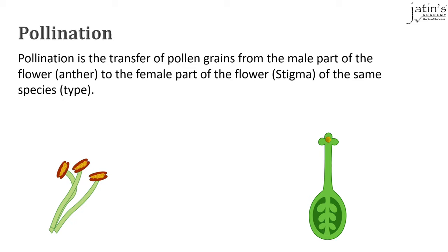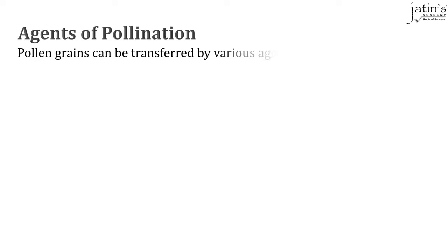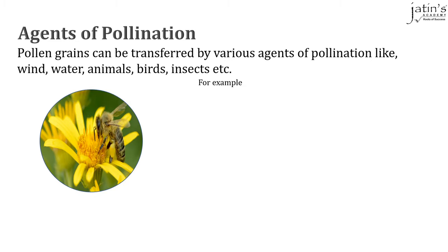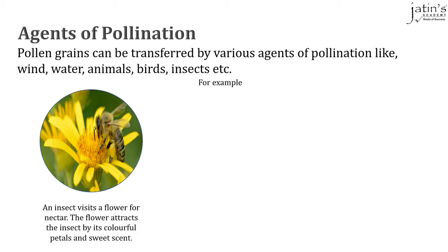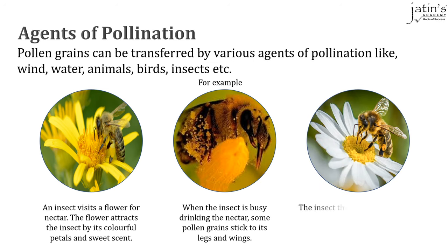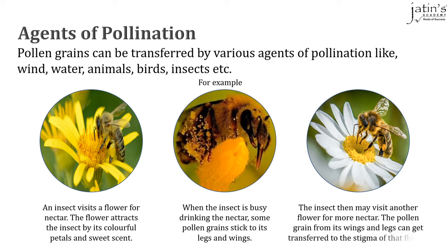Remember that this has to occur between the same species of plant. Pollen grains can be transferred by various agents of pollination like wind, water, animals, birds and insects. For example, an insect visits a flower for nectar — the flower attracts the insects by its colorful petals and sweet scent. While the insect is busy drinking the nectar, some pollen grains get stuck on its legs and wings. When the insect visits another flower of the same species, the pollen grains from its wings and legs may get transferred onto the stigma, and pollination has occurred.